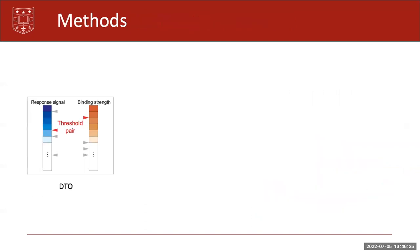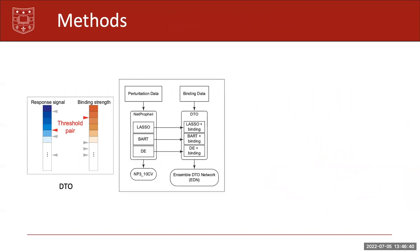As I said, DTO tries to find optimal threshold pair for response signal and binding strength. So in our algorithm, as a first step, we feed in perturbation data to NetProphet, which has three components: LASSO, BART, and DE. Now NetProphet has its own way to combine the output from these three components, which is NetProphet 310CV. It uses an AdaBoost algorithm.